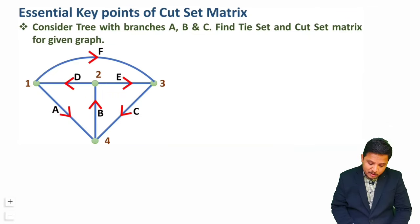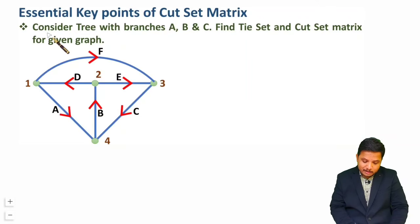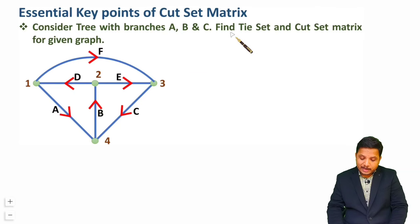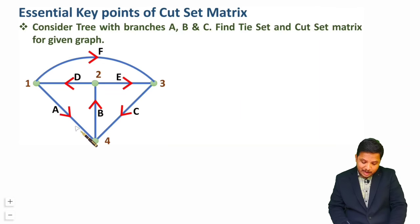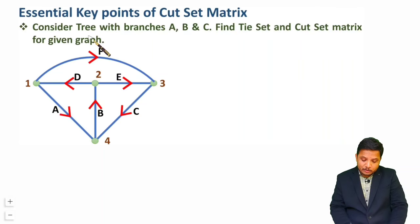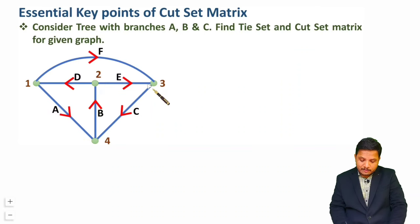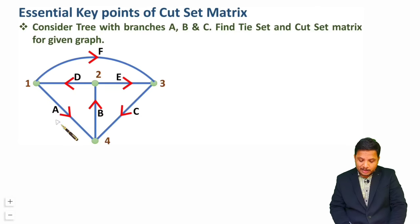So let us see the question. Here the question is to consider a tree with branches ABC and find the tie set and cut set matrix for the given graph. This graph has four nodes, so the total branches in the tree should be four minus one, that is three. We are given a tree with three branches ABC.